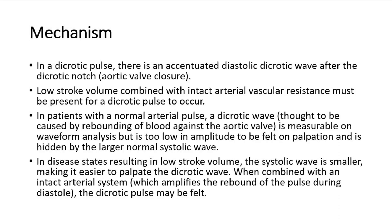In a dicrotic pulse, there is an accentuated diastolic dicrotic wave after the dicrotic notch, due to aortic valve closure. Low stroke volume combined with intact arterial vascular resistance must be present for a dicrotic pulse to occur. In patients with a normal arterial pulse, a dicrotic wave — thought to be caused by rebounding of blood against the aortic valve — is measurable on waveform analysis, but is too low in amplitude to be felt on palpation, and is hidden by the larger normal systolic wave. In disease states resulting in low stroke volume, the systolic wave is smaller, making it easier to palpate the dicrotic wave. When combined with an intact arterial system, which amplifies the rebound of the pulse during diastole, the dicrotic pulse may be felt.